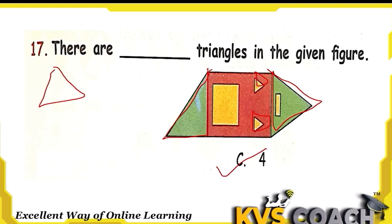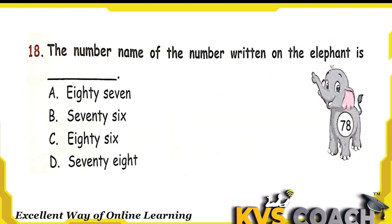The next question: the number name of the number written on the elephant is — the number is 78. Option D is the right answer.